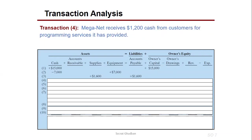Transaction 4: MEGANET receives $1,200 cash from a customer for programming services already provided. Providing a service means we are earning revenue. Cash increases by $1,200, and on the other side of the equation, revenue increases by $1,200.